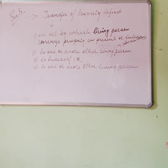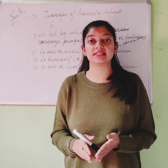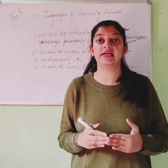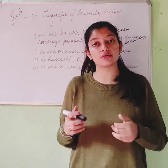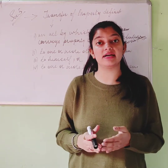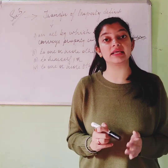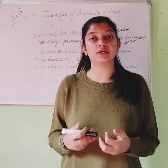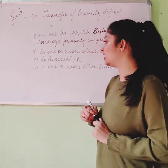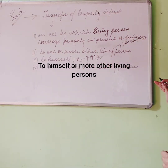The third ingredient is transfer 'to himself.' Before 1926, a person could not transfer property to himself. However, after the amendment of 1926, a person can transfer property to himself when he is creating a trust and is the sole trustee. This is the significance of the 1926 amendment. The fourth ingredient is that the transferor can transfer to one or more other living persons — meaning multiple transferees are possible.